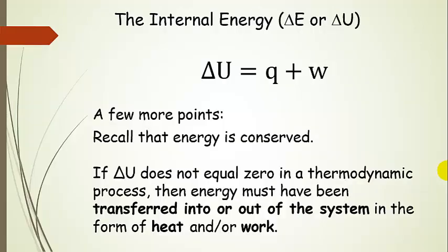Remember that energy is conserved. There are some processes where delta U doesn't equal zero — that just means that energy must have been transferred into or out of the system in the form of heat or work. So it did go somewhere; it didn't disappear. But delta U doesn't always have to be zero.